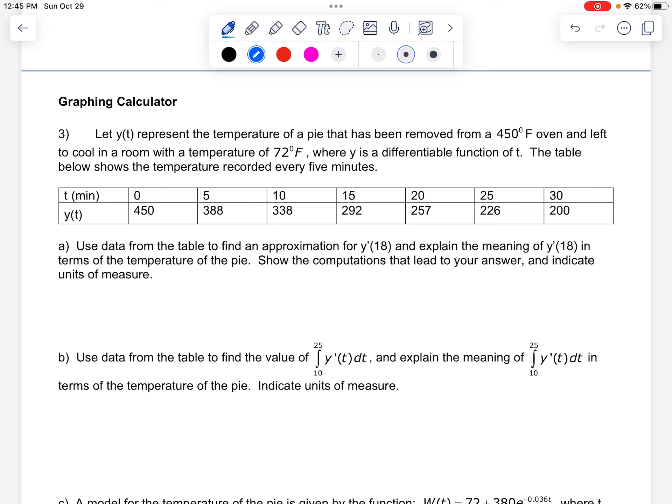Okay, let's look at one other table problem. So y in this problem is the temperature of a pie that has been removed from a 450 degree oven. It's the temperature and it says we're talking Fahrenheit, so that's your units. Y is a differentiable function, so that means y is also continuous. Here's the table representing a couple different temperatures every five minutes. So first question,